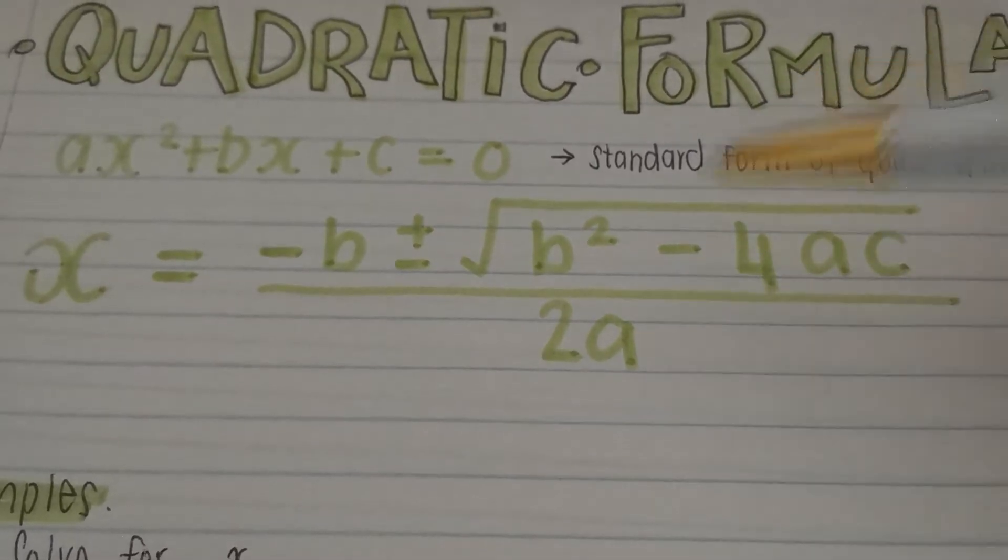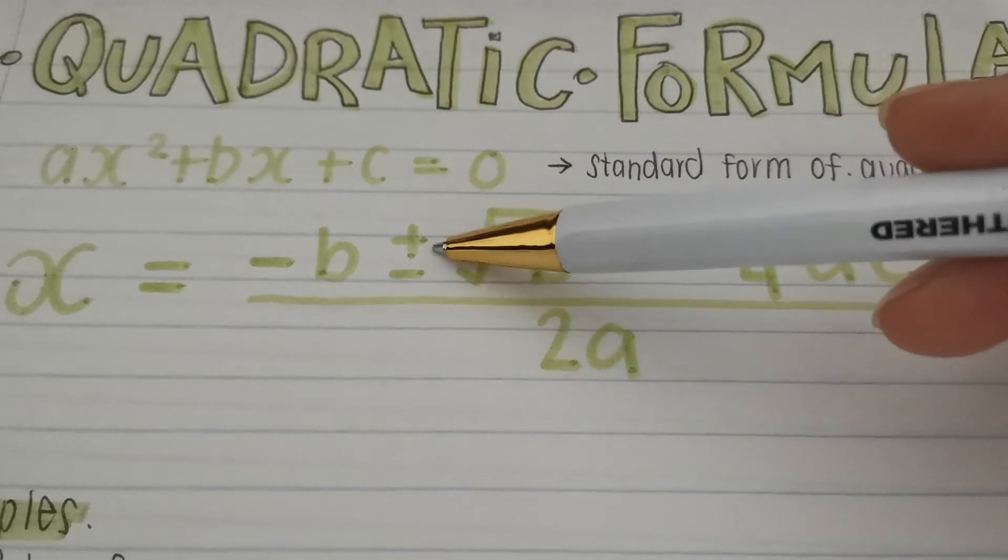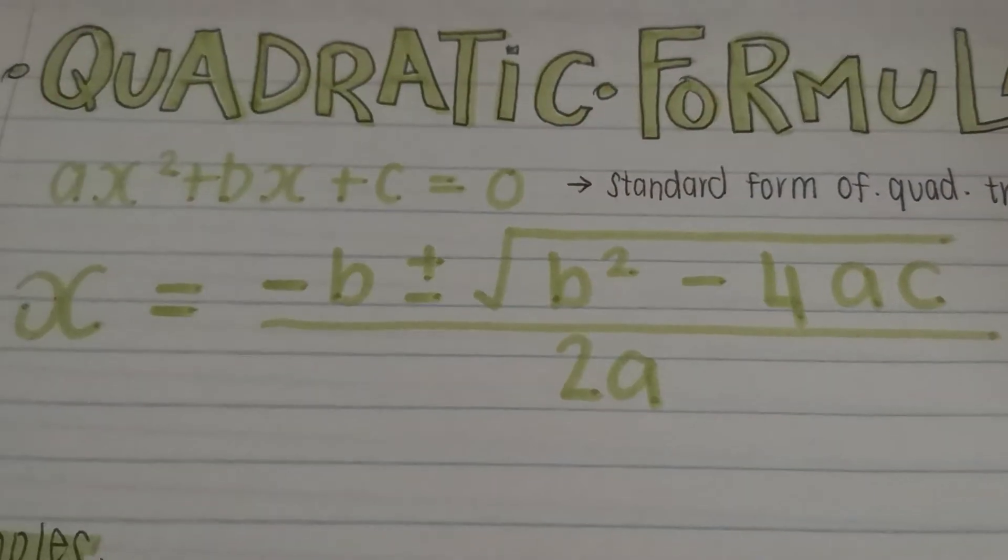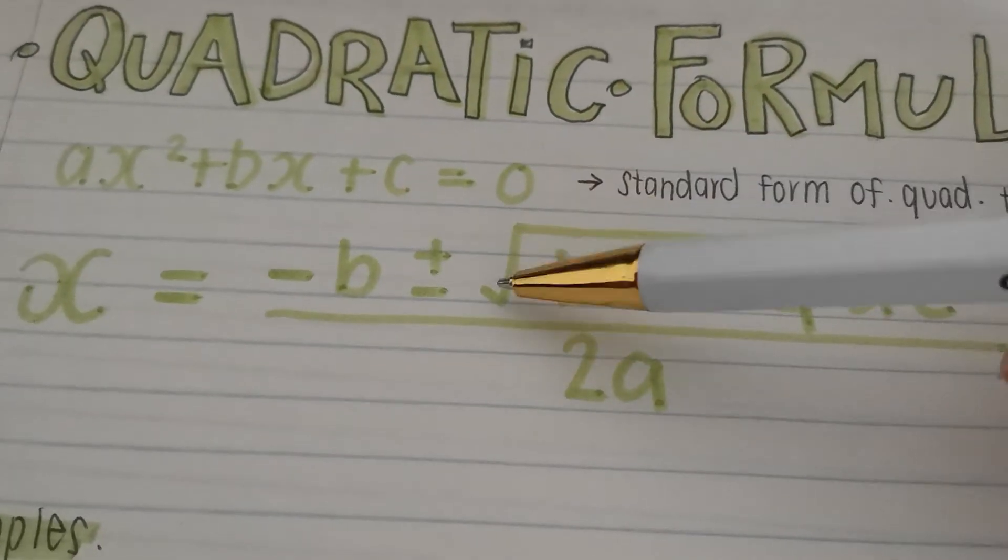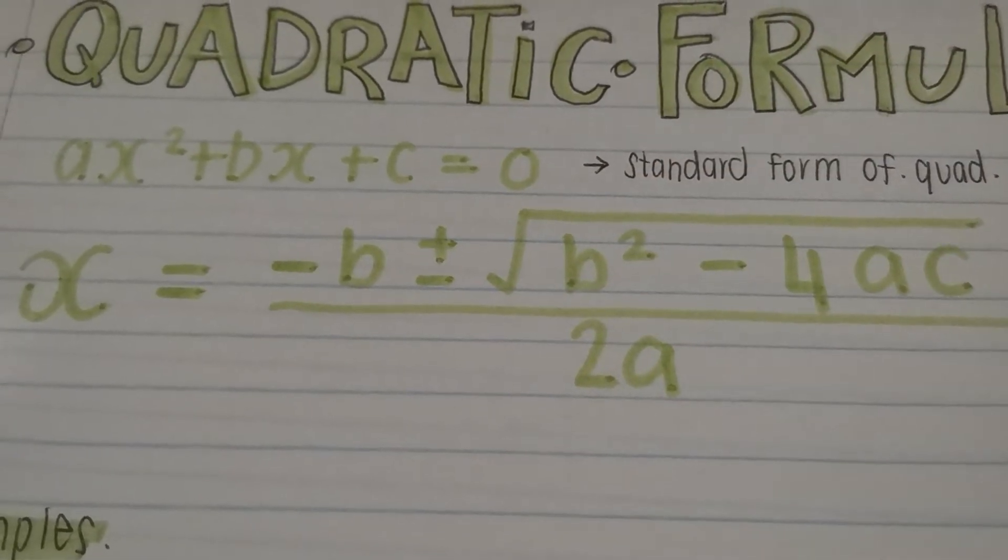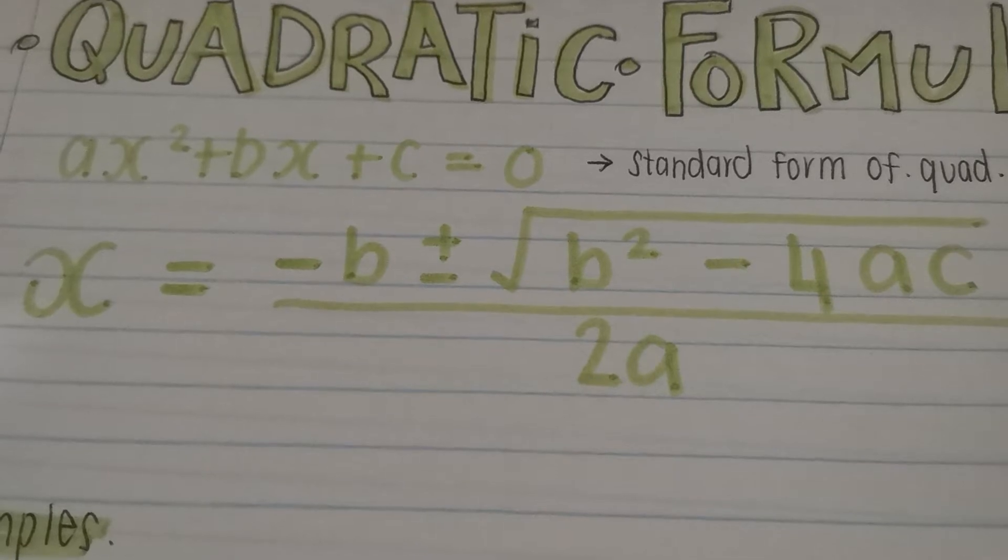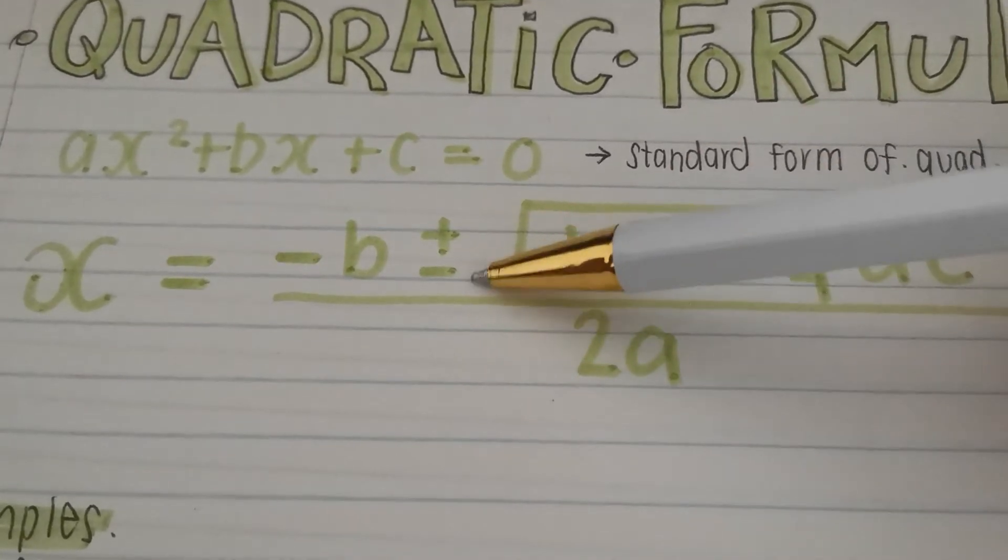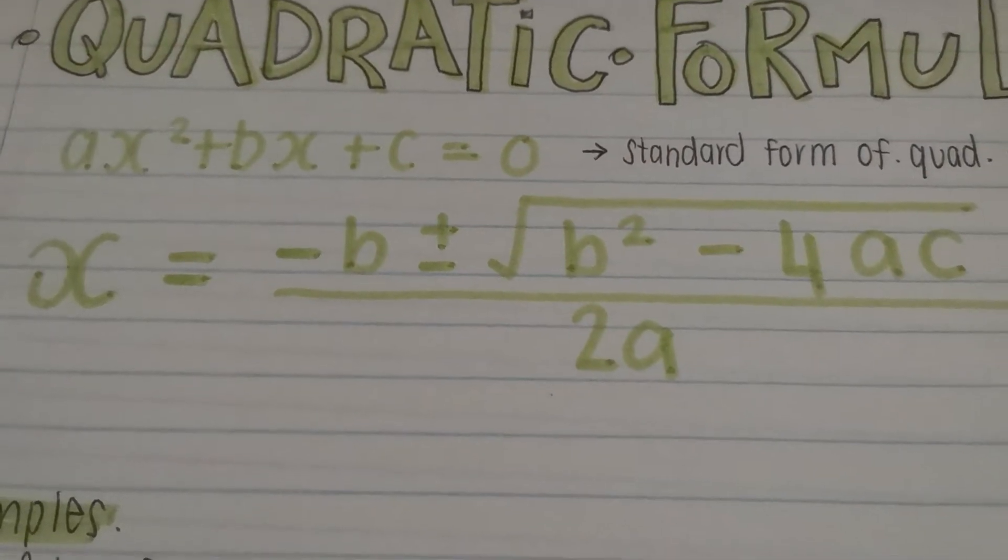One more thing I need to mention. You would see over here, there's a plus and minus sign. Why is there a plus and minus sign? You guys know that when you are square rooting something, there are two possible solutions, the positive one and the negative one. That's what we're doing over there. Let's show you how this works. This is the formula. Please learn it. You should know it off by heart.